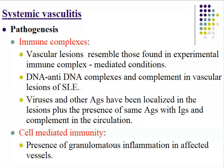Immune complex vascular lesions resemble those found in experimental immune complex-mediated conditions. There is evidence from experimental animals demonstrating deposition of immune complexes. When we talk about immune complex, we mean antigen and antibody forming a complex causing an immediate inflammatory process. This can be demonstrated by DNA and anti-DNA complexes and complement in the vascular lesions of systemic lupus erythematosus.